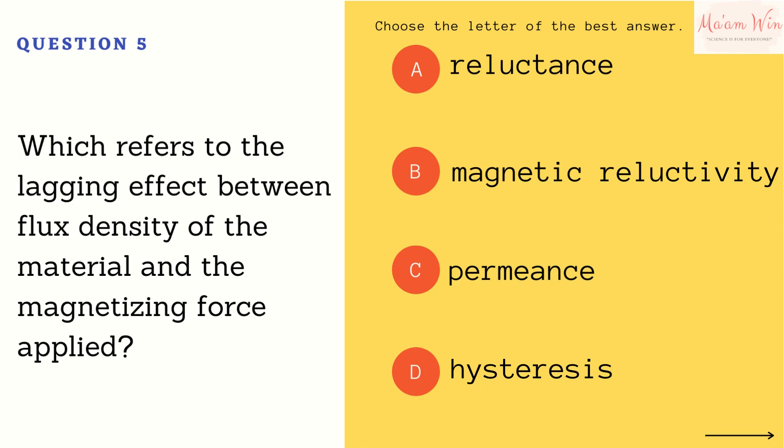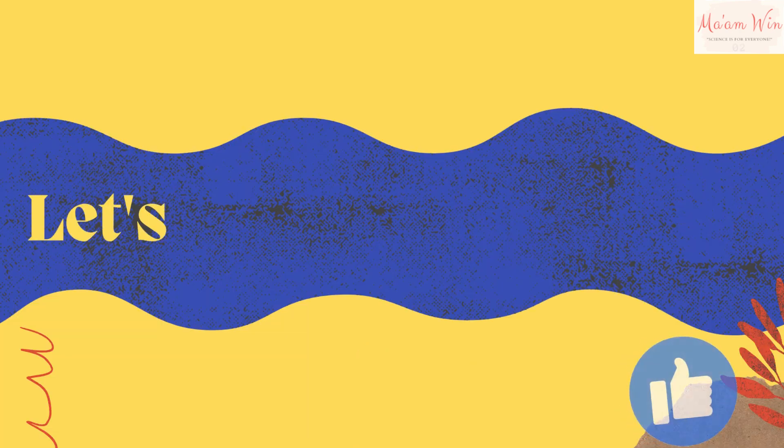Question number five: which refers to the lagging effect between flux density of the material and the magnetizing force applied? Letter A, reluctance. Letter B, magnetic reluctivity. Letter C, permeance. Letter D, hysteresis. Choose the letter of the best answer.